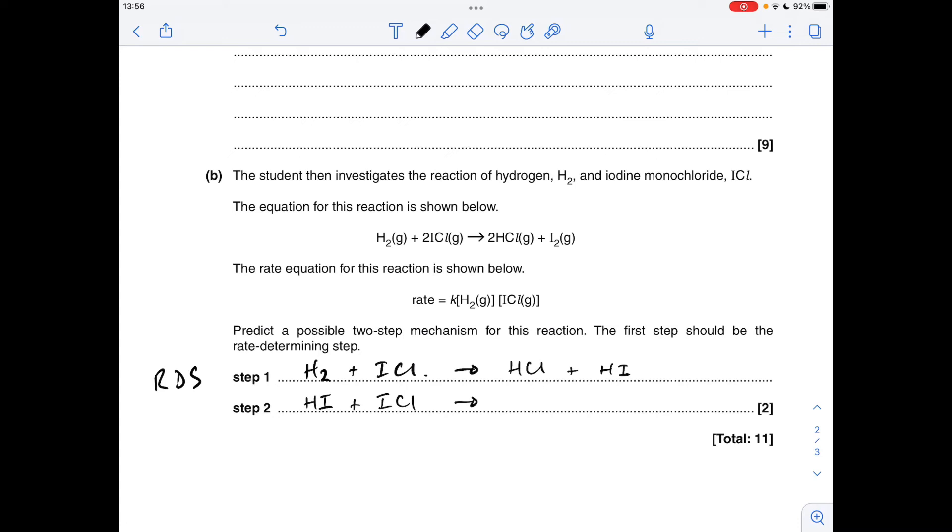So we need another HCl and we also need to make an I2. So that works. So when you add these two equations together, you'll notice that the HIs will cancel and you're left with H2 plus two ICLs gives two HCLs and I2.